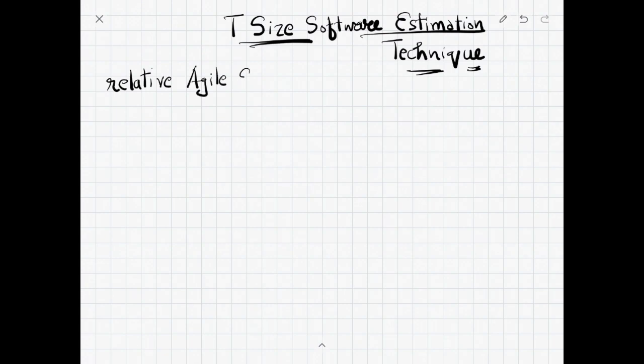In agile, every requirement is called a story point and it has to be estimated and built in a sprint. Before the sprint, we do estimation which is called t-shirt size estimation. It is a relative estimation technique.